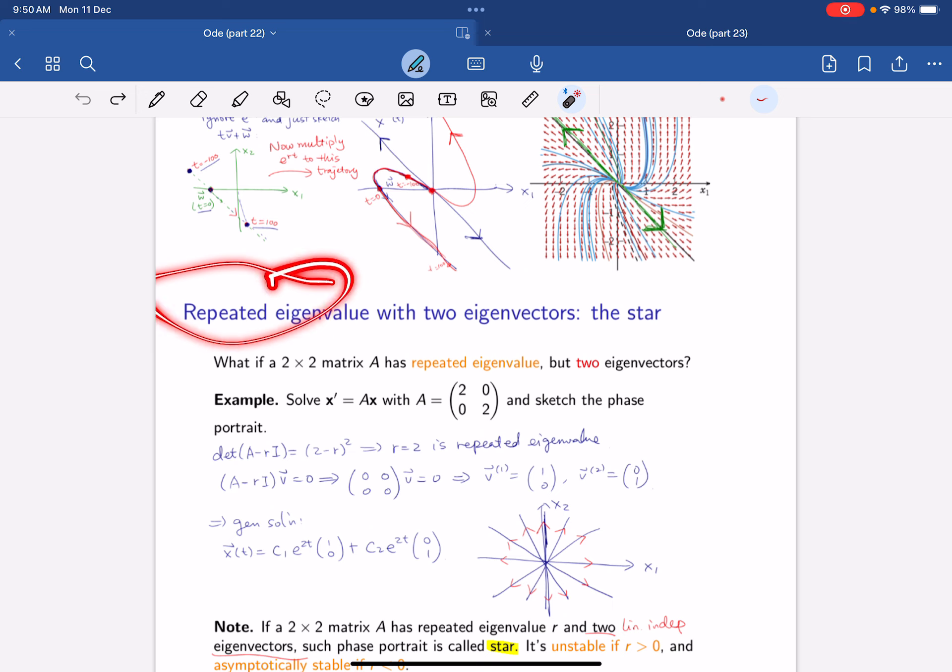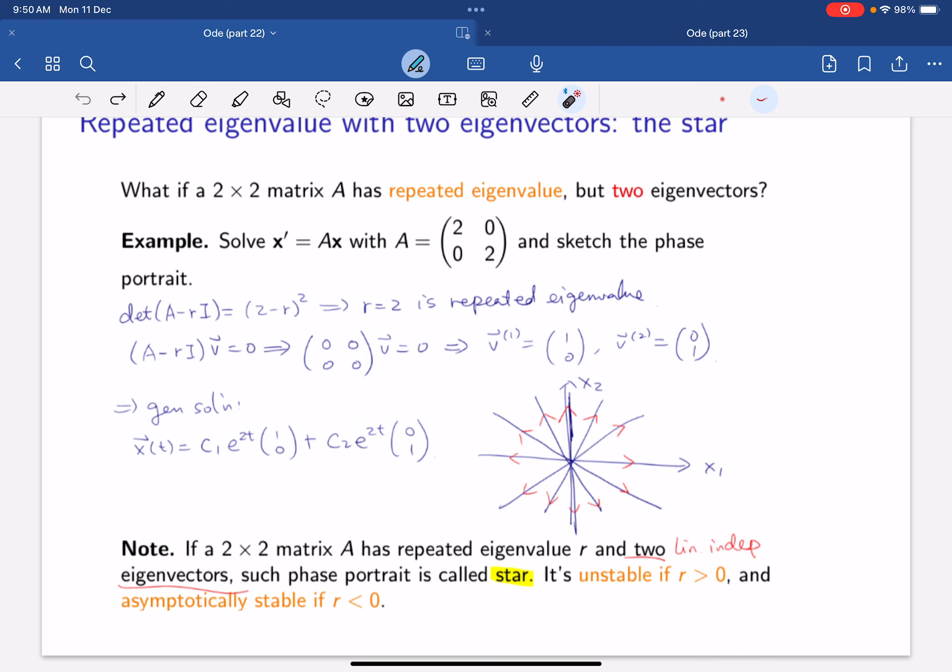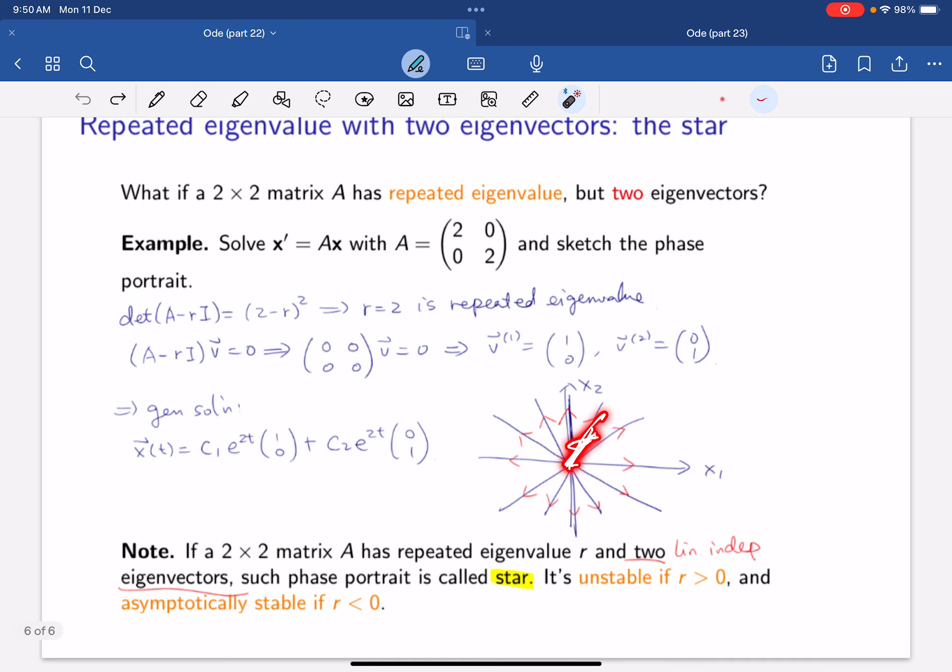And if this repeated eigenvalue has two eigenvectors, then it's easy, because when you have two eigenvectors, you can diagonalize and solve easily. So it's not really a problem. And the phase portrait will just look like a star, where you go outwards. If R is positive, then it's unstable. And if R is less than 0, then you go inwards. And then they will be asymptotically stable.